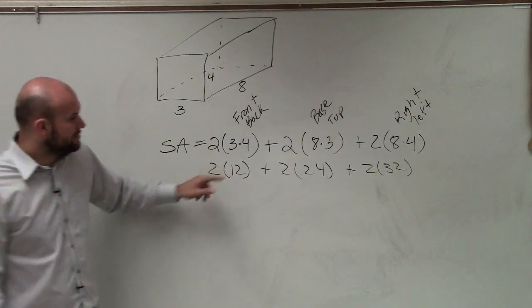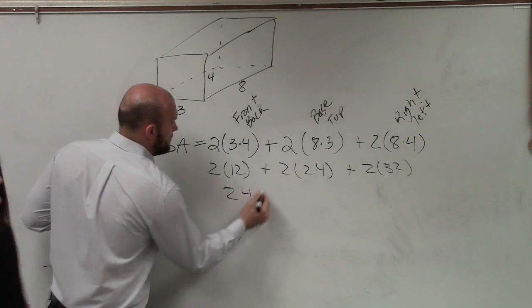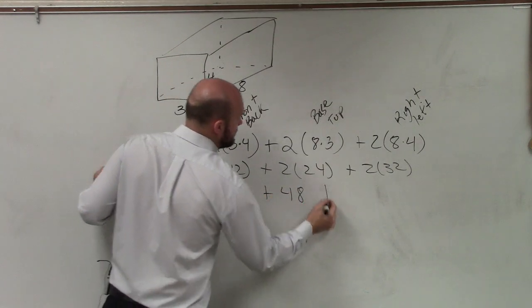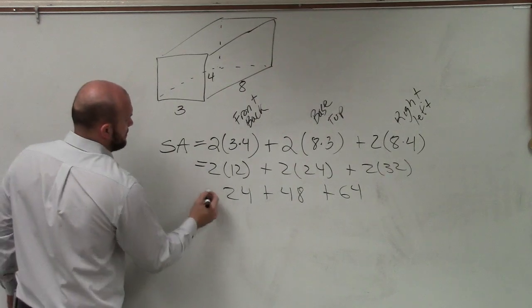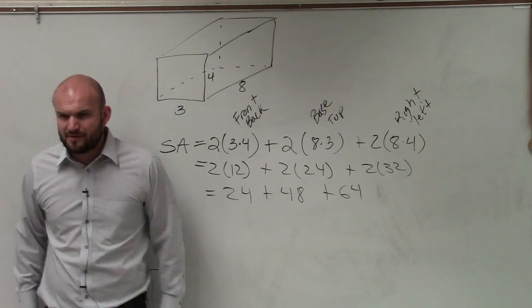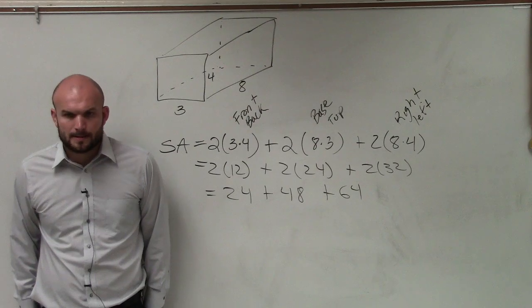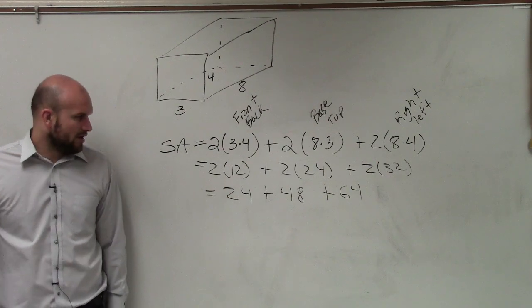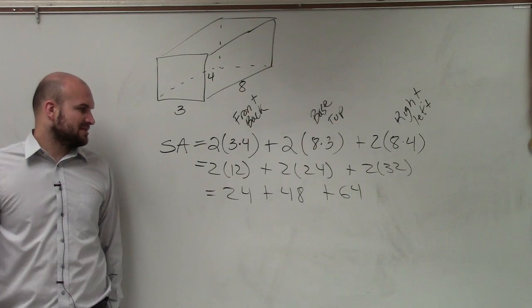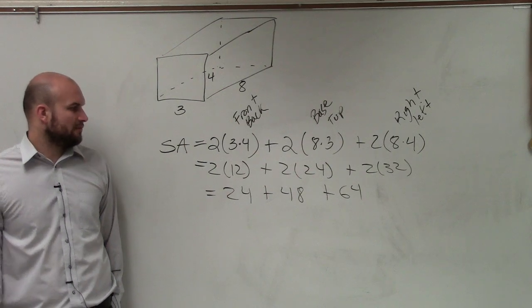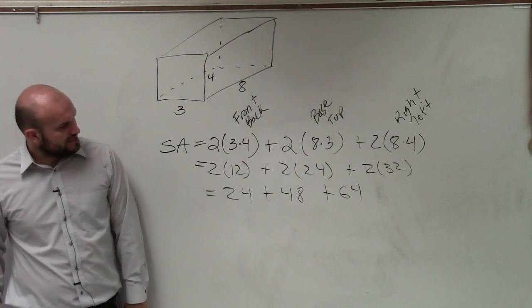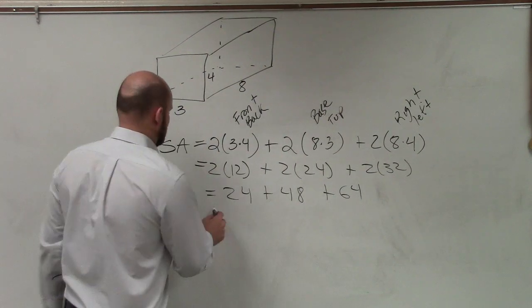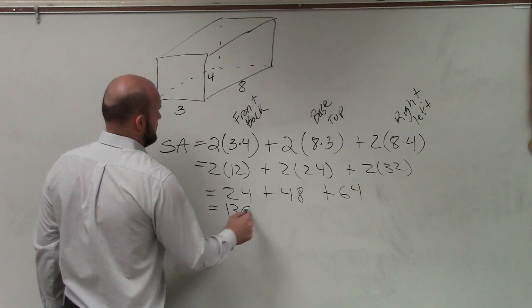So 2 times 12 plus 2 times 24 plus 2 times 32. All right, 2 times 12 is 24 plus 48 plus 64. Is everybody following me on my math? A little bit. I understand what I'm saying. Yeah. So we have 24 plus 64, or 24 plus that is going to be 72, is going to be 136.